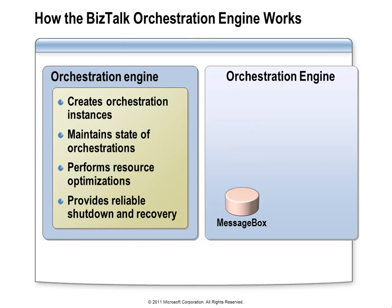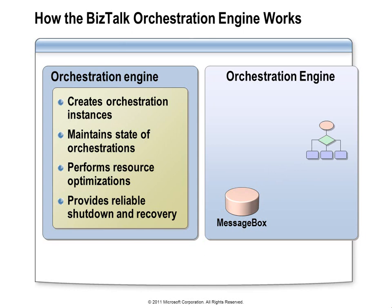The orchestration data still lives on — this instance of the business process is still alive and can still continue — but it will remain dehydrated until there's more work for it to do. Meanwhile, the orchestration engine continues creating instances for new messages and destroying completed orchestrations, while the dehydrated orchestration waits. When the purchase order approval finally arrives, the orchestration engine will deserialize that instance into a new object — this is known as rehydration — and the orchestration instance is free to execute to completion. Once complete, the engine destroys the instance, frees up memory, and the cycle continues.